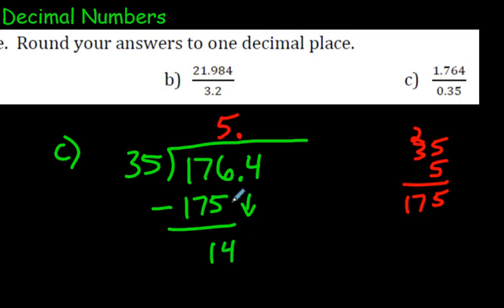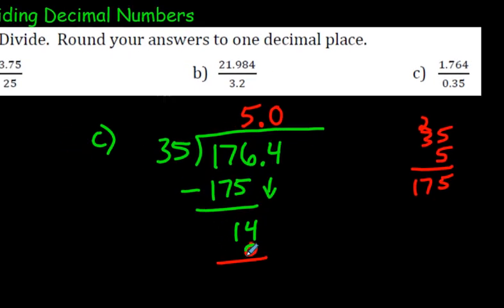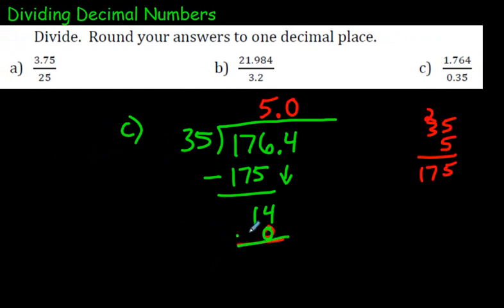5 times 35 is 175. Well, that's easy to subtract. The answer is 1. Bring down the 4. 35 goes into 14 zero times. Make sure you put a zero there. Zero times 35 is zero. If you subtract those, you still get that. Now let's bring down another number because we don't want a remainder of 14 here. We want that this question should look nice at the end.